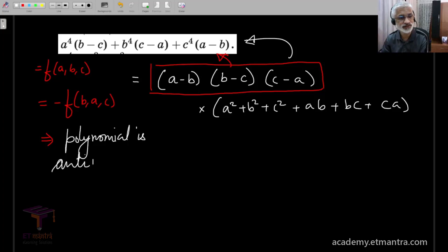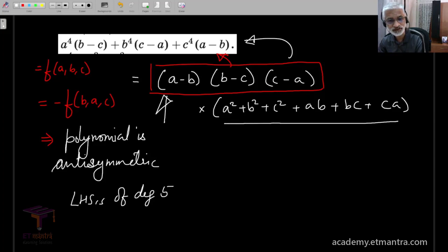So, as we discussed in the previous lesson, we already got three factors. Now, the left hand side is of degree 5. So, it is quite easy to guess that the other polynomial will be of degree 2. In fact, it is going to be symmetric. So, degree 2 and symmetric.